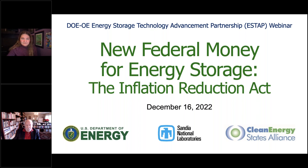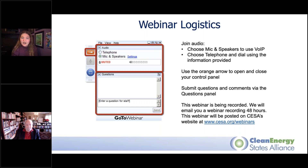Before we go any further, let's go through some quick webinar logistics. You'll notice you have a webinar console, which should look like the picture shown on the screen. You can use the console to adjust your audio — either you can listen from your computer speakers or join via telephone. All attendees are in listen-only mode. Near the bottom of the console, you'll see a box where you can write and submit your questions. If you'd like to view the speaker's presentation slides in full screen, you can minimize the webinar console by clicking the orange arrow.